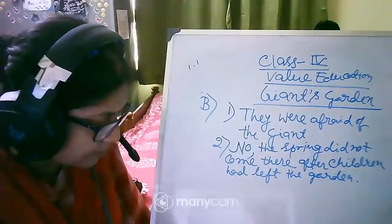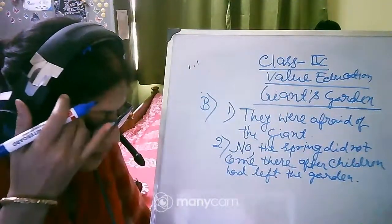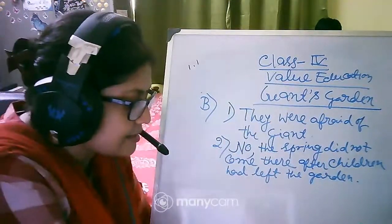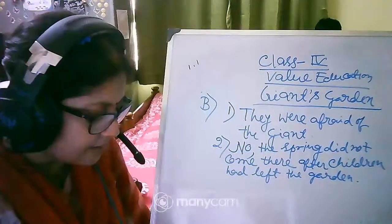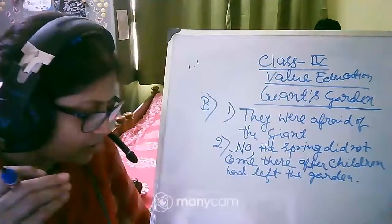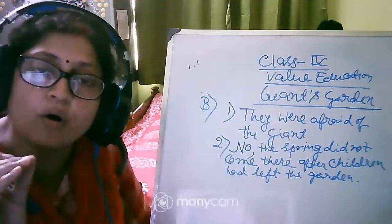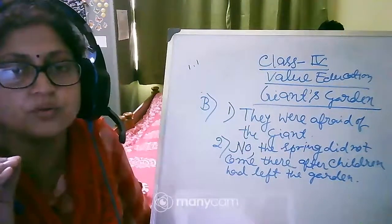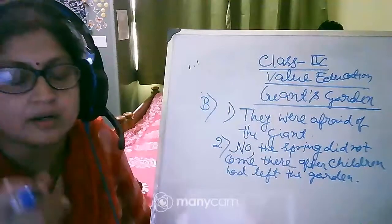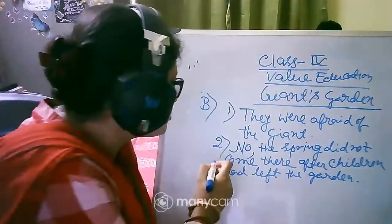Number three, why was Giant amazed to hear a cuckoo in his garden? Why? Because he realized, also he has seen that after many days from a tiny hole of the garden, a small kid came. So at that time spring also came with a beautiful flower. So he was amazed.